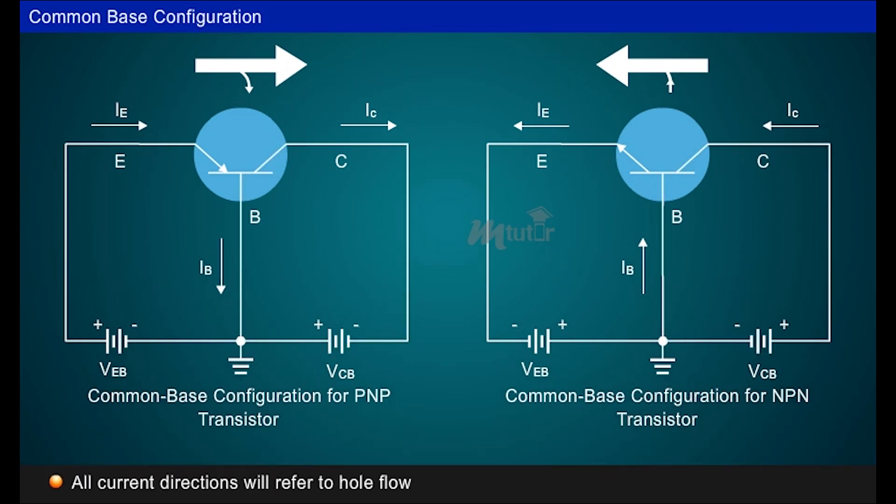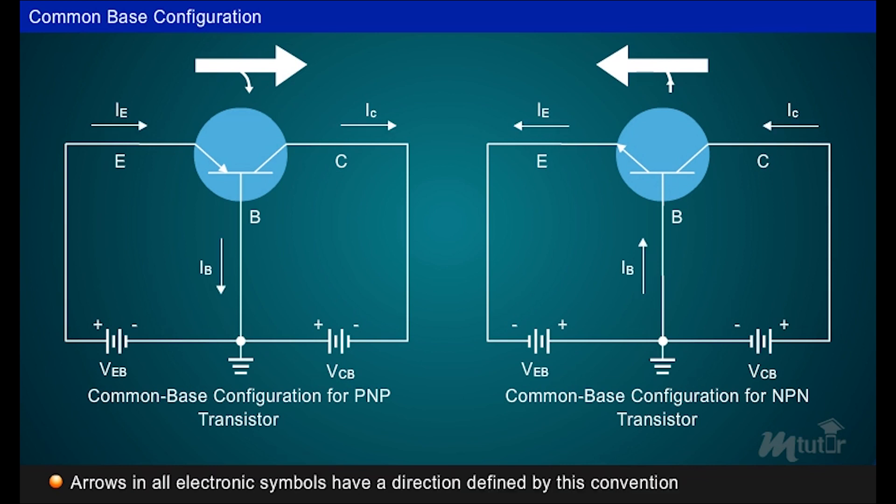All current directions will refer to conventional, that is, hole flow rather than electron flow. The result is that the arrows in all electronic symbols have a direction defined by this convention.